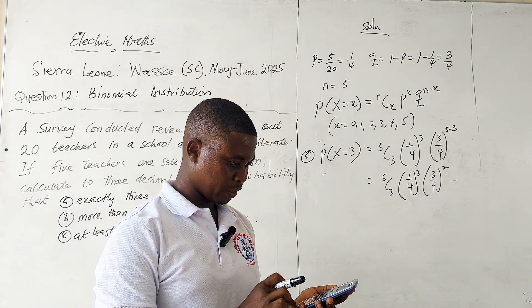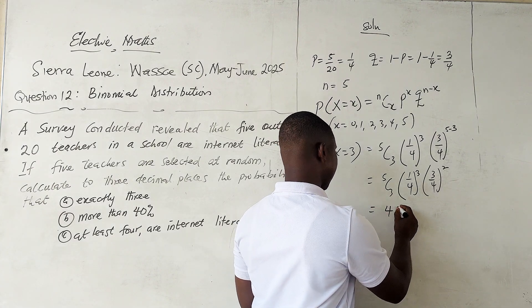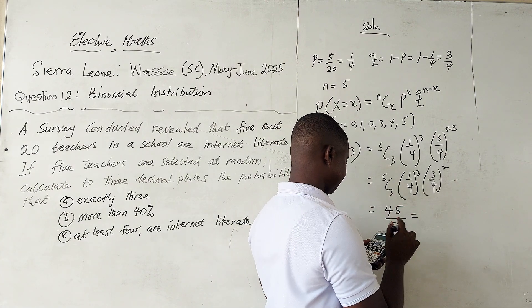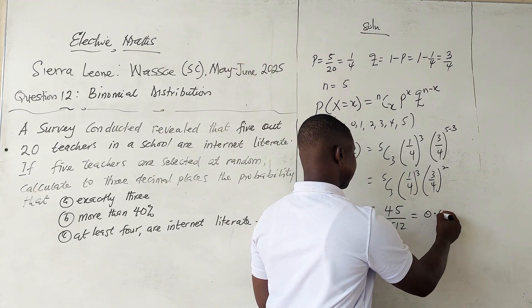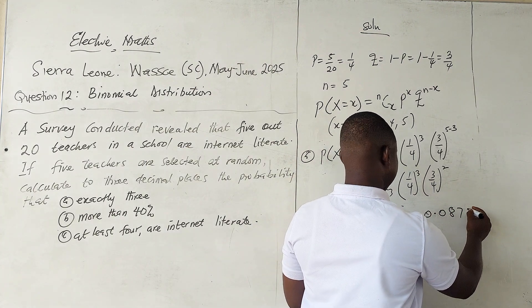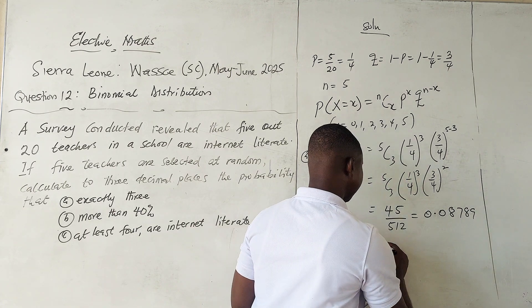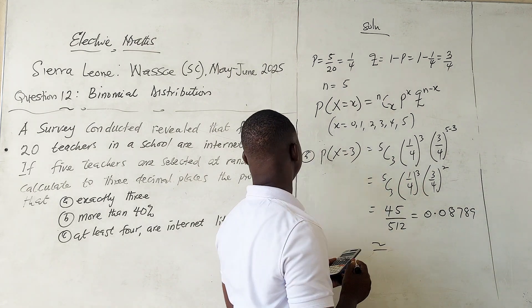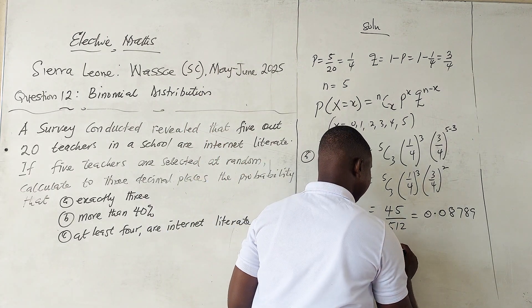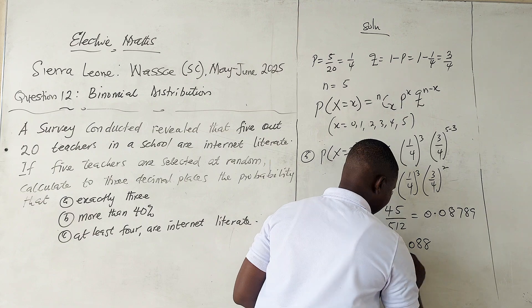Working this out on the calculator gives us 45/512, which is the same as 0.0879. Rounding to three decimal places, the answer is 0.088.